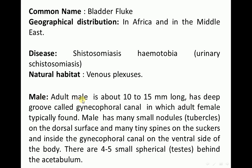The adult male is about 10 to 15 millimeters long and has a deep groove called the gynecophoreal canal, in which the adult female is typically found. The male has many small nodules or tubercles on the dorsal surface and many tiny spines on the suckers. There are two types of suckers: oral suckers and ventral suckers, which is also called the acetabulum. These tiny spines can be found on the oral suckers, ventral suckers, and inside the gynecophoreal canal on the ventral side of the body.